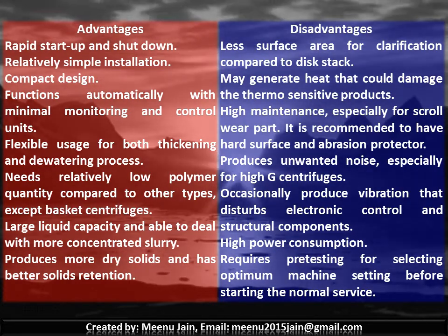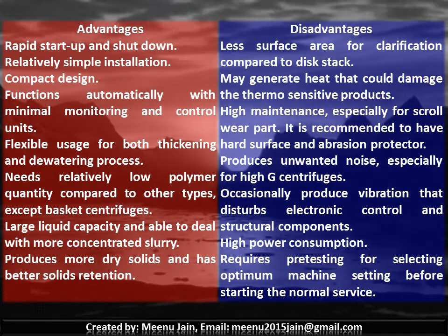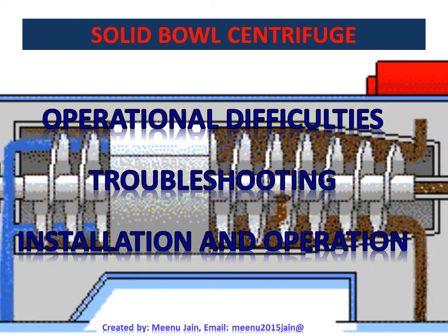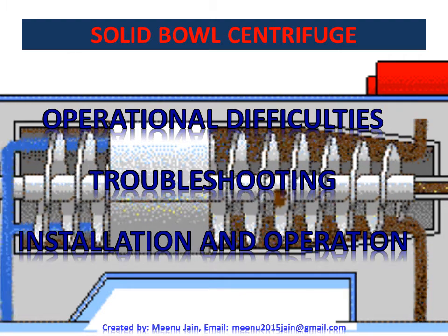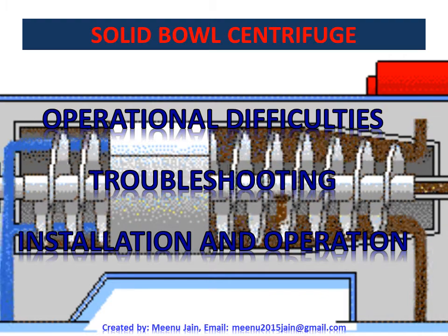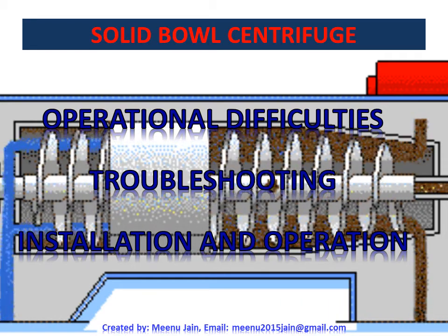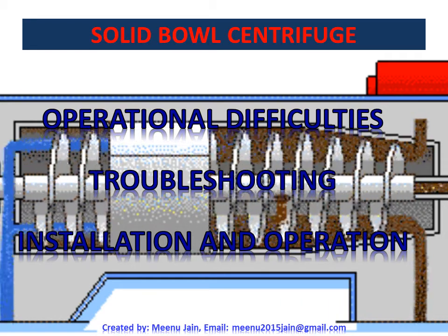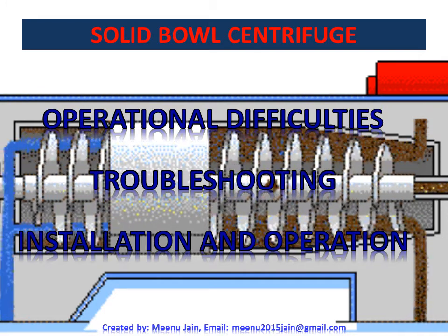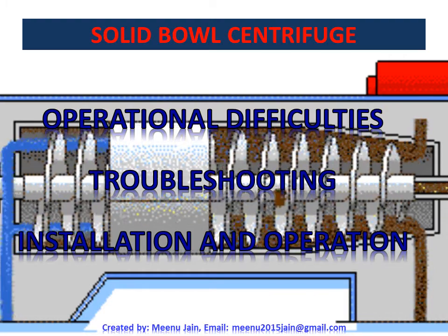The solid bowl centrifuge needs high power consumption and requires pre-testing to select optimum machine settings before normal service. Many process variables affect centrifuge performance: sludge cake solids, total suspended solid recovery, feed flow rate, rotational speed of shaft, differential speed of scroll, depth of settling zone, and physico-chemical properties of suspended solids and liquids. A major operational difficulty is disposal of centrate due to the relatively high suspended and non-settleable solids.